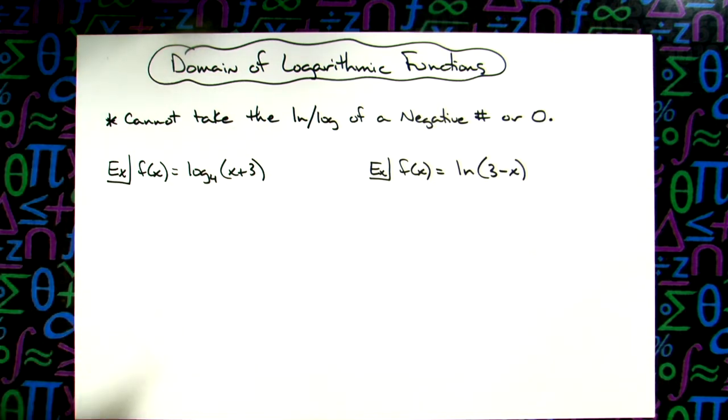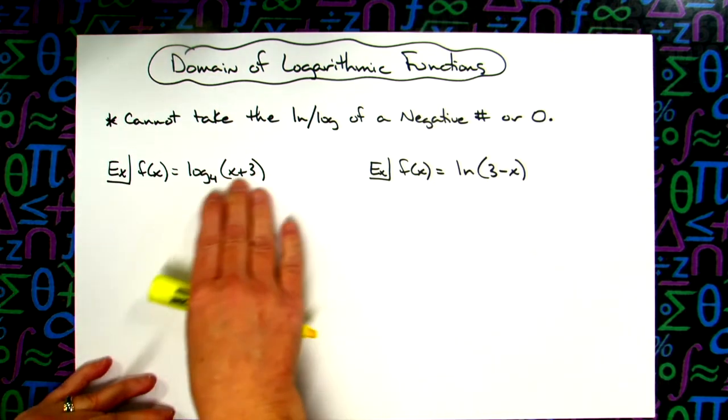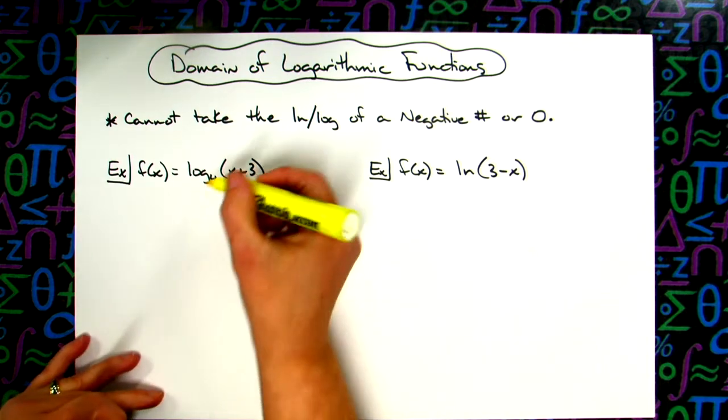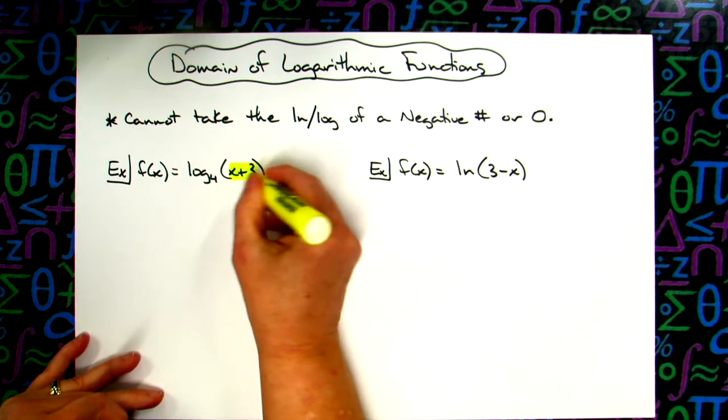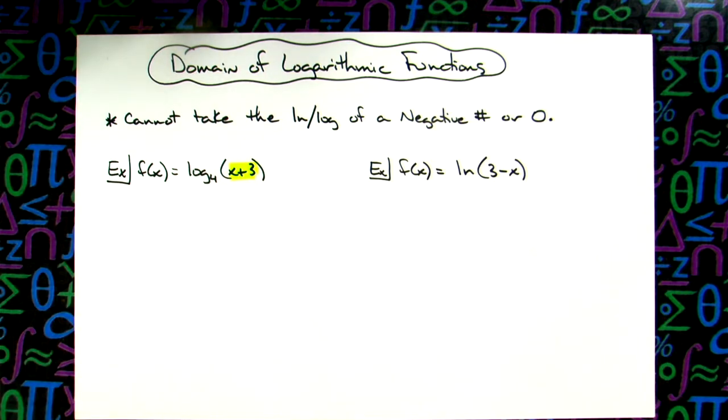So if I just have a straightforward log of x plus 3 base 4, this expression, this quantity in here cannot be negative, and it cannot be equal to zero. In other words, it's got to be greater than zero.